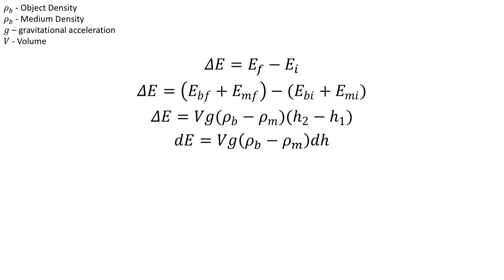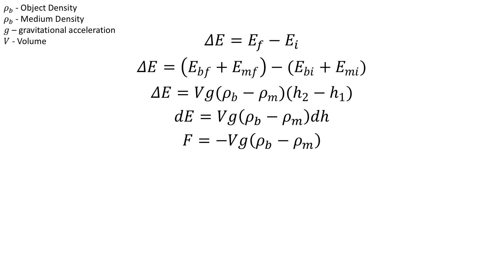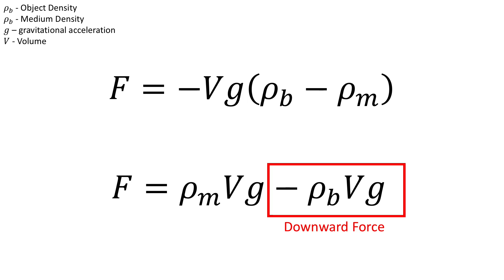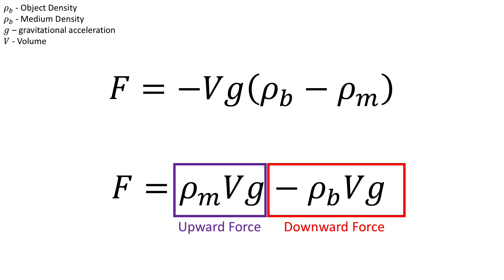We can write that out in full, simplify, collect terms in the density of the buoyant object and the density of the medium, and rearrange. Setting the difference in height as dh, we can write this in differential form. Force is the derivative of potential energy with respect to h, which gives us an expression with two components: a downward force proportional to the density and volume of the buoyant object times the acceleration due to gravity, and an upward force due to the density and volume of the displaced water times the acceleration due to gravity.